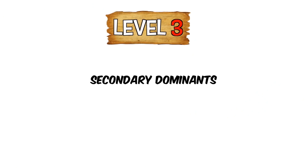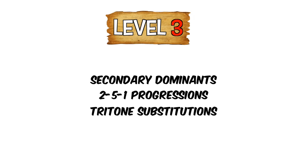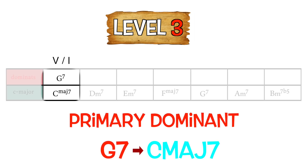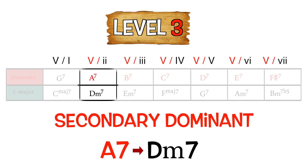In level 3 we will play around with secondary dominants, II-V-I progressions, and tritone substitutions. These can also be called approach chords and can be used to create even more tension and movement. Now the V chord is the primary dominant in the key of C. However, the other chords in C can also have their respective dominant seven chords, and those would be known as secondary dominants.